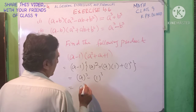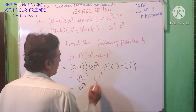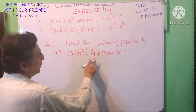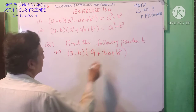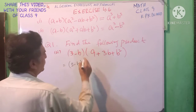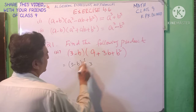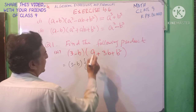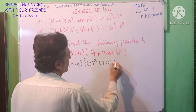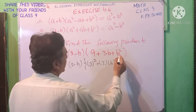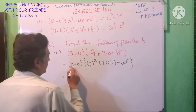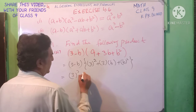a cube minus one cube equals one. This is our answer. Second part: a minus b into a square plus ab plus b square. a is 3, so 3 square which is 9, plus ab which is 3 into b, plus b square. So the result is 3 cube minus b cube.